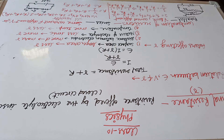Cathode to anode inside the cell means from excess to deficiency. Outside the cell, it flows from the anode to cathode, meaning from the positive terminal to the negative terminal. The current always flows from higher potential to lower potential, and the electrons flow from the region of excess to deficiency.